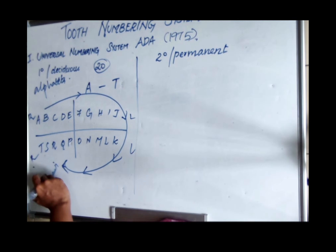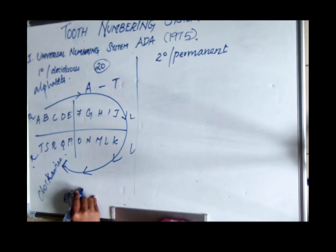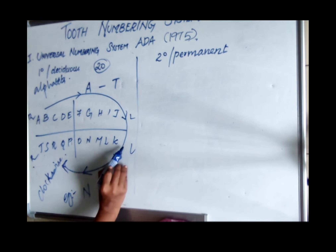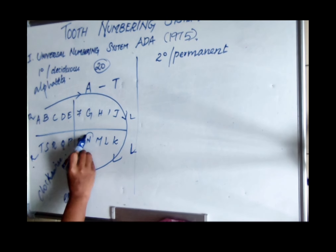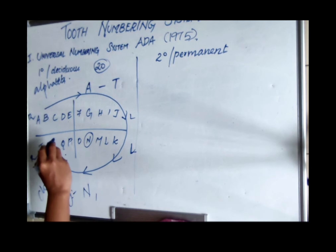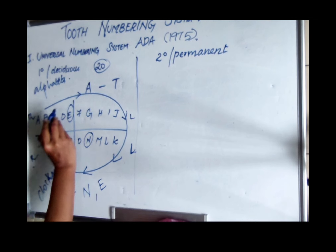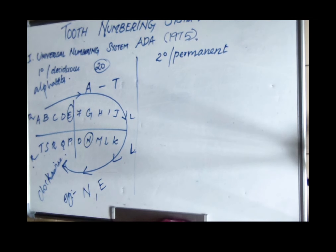The numbering follows a clockwise direction. For example, N denotes the mandibular left lateral incisor; E denotes the maxillary right central incisor; R denotes the mandibular right canine.